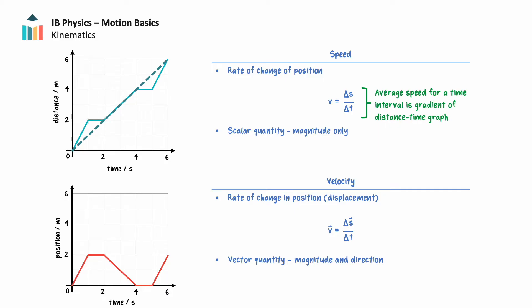However, in the next second, the gradient of the position-time graph is less steep than the gradient of the average speed, so the object's speed in this segment is slower than the average speed. Velocity is also a rate of change, but it is the change of position or displacement. We can calculate the average velocity as the total change in displacement over the total time. We've included arrows on our symbols for velocity and displacement to denote that these are vector quantities with both magnitude and direction. This notation is commonly used in physics, but it is not used by the IB. Moving forward, we will differentiate whether the symbol refers to speed or velocity, or distance or displacement, with context.